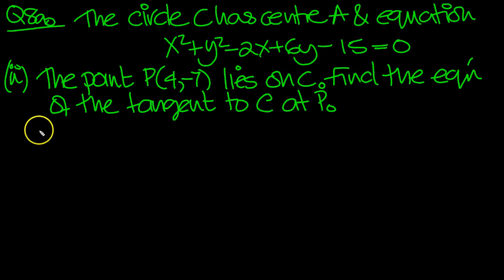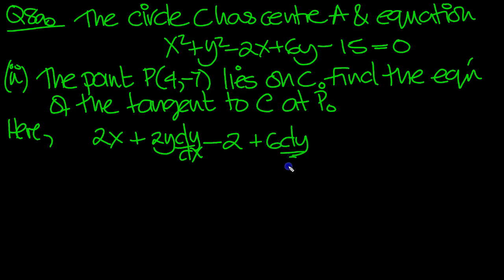Here's our equation of the circle, so differentiating. Let's do that then. So 2x plus, using the chain rule, 2y dy/dx, minus 2 plus 6 dy/dx equals 0. The constant goes to 0, of course.